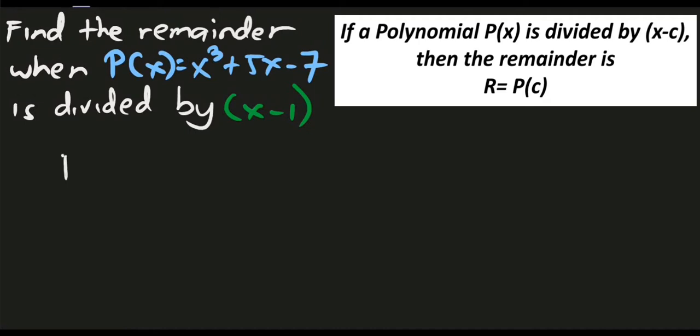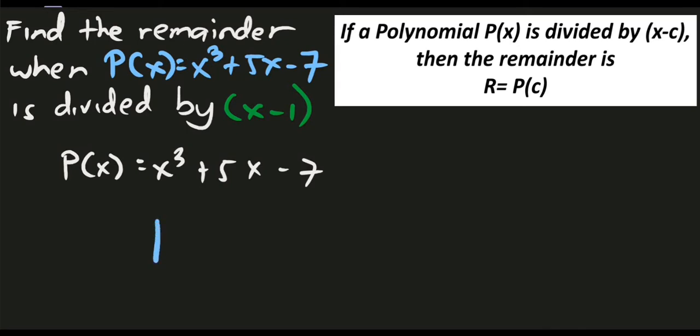Since we have P of x as x cubed plus 5x minus 7, to use synthetic division, step 1: make sure the dividend is in standard form — which it is. Step 2: extract the numerical coefficients. We have 1 for x cubed, 0 for the missing x squared term, 5 for the linear term, and negative 7 for the constant.